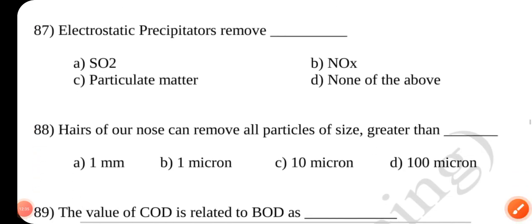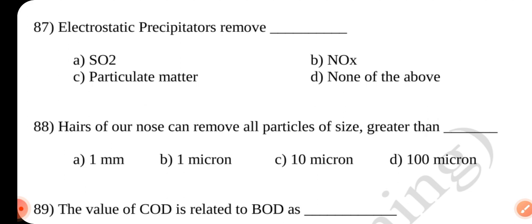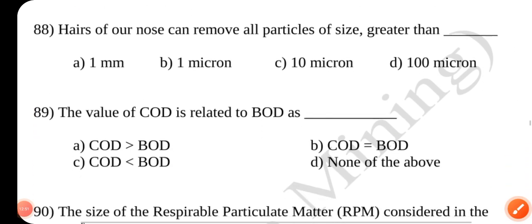Question number 87. Electrostatic precipitator remove dash. Answer is C particulate matter.